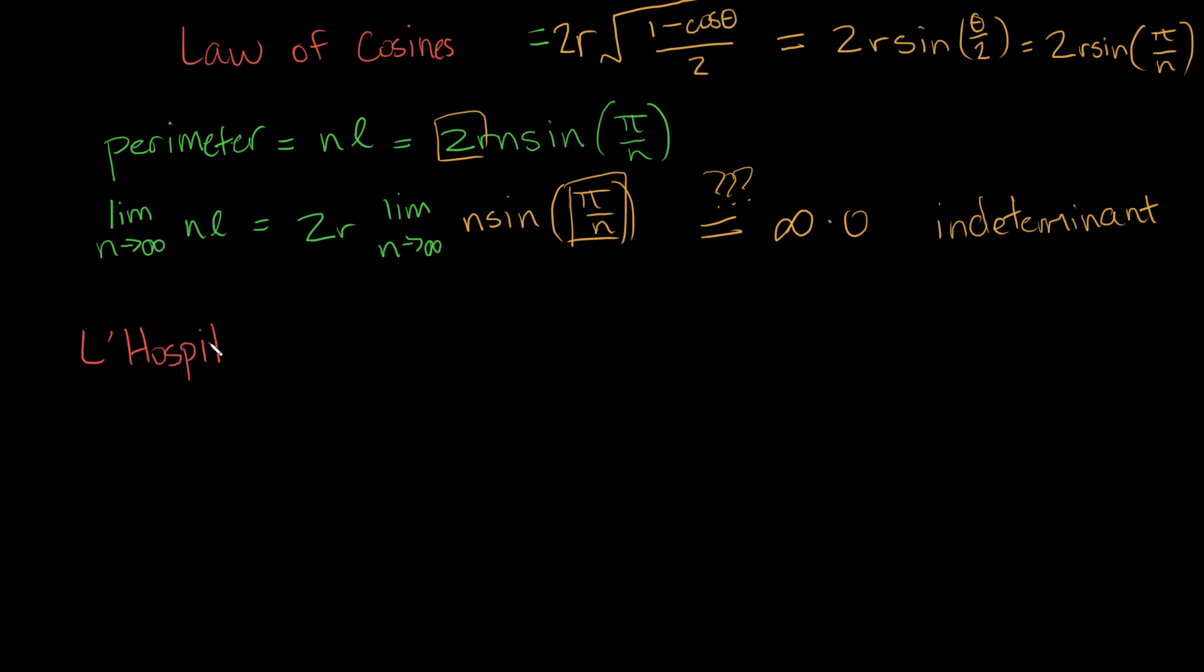L'Hopital's rule is one that states how to deal with limits that are indeterminate. But it only works if you have 0 over 0, or some kind of positive or negative infinity over some kind of positive or negative infinity. Right now, we just have infinity times 0. We want to get it into this form of 0 over 0. How can we do that?